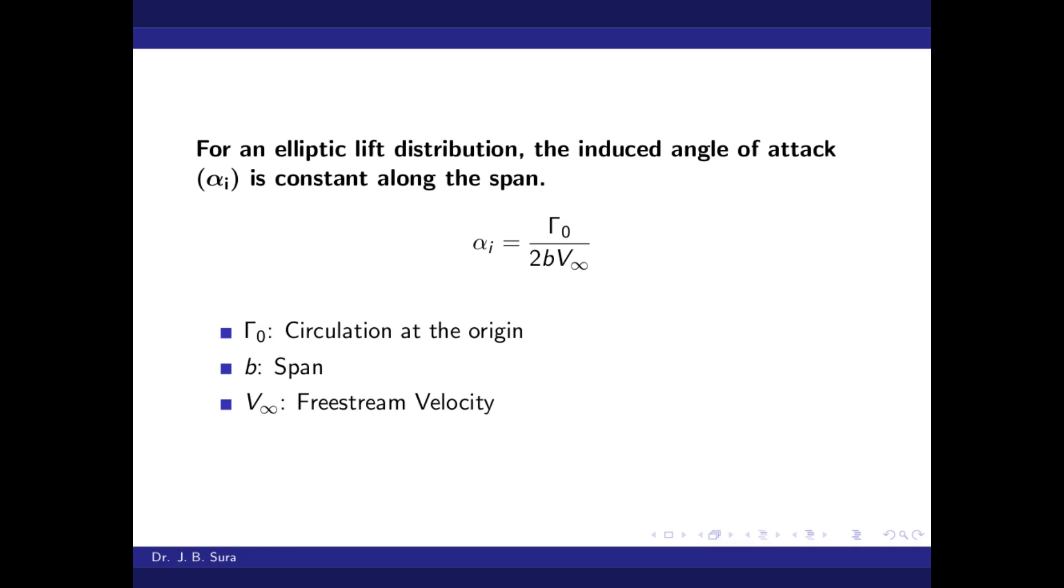Please remember, for an elliptic lift distribution, the induced angle of attack alpha_i is constant along the span. The equation is alpha_i equals Γ₀ divided by 2bV∞, where Γ₀ is circulation at the origin, b is span, and V∞ is freestream velocity.